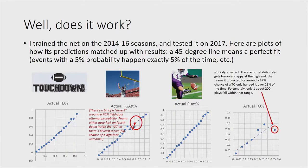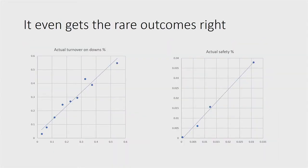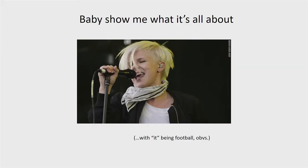Did it work? At the drive level, it performed impressively well. I trained both my predictions for each individual statistic and the drive results on the 2014 to 2016 seasons, then tested them on 2017 — a purely out-of-sample test. It got touchdown frequency almost perfect, field goal attempt frequency almost perfect, punt frequency almost perfect, and turnover frequency pretty close to perfect except at the very high end. Even rare events like failed fourth-down conversions or safeties — it gets these frequencies pretty much right. Now, how do drive-level forecasts add up into a game result?